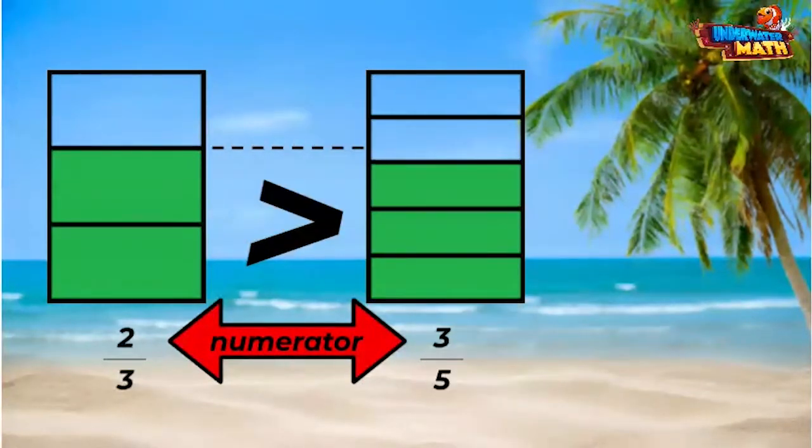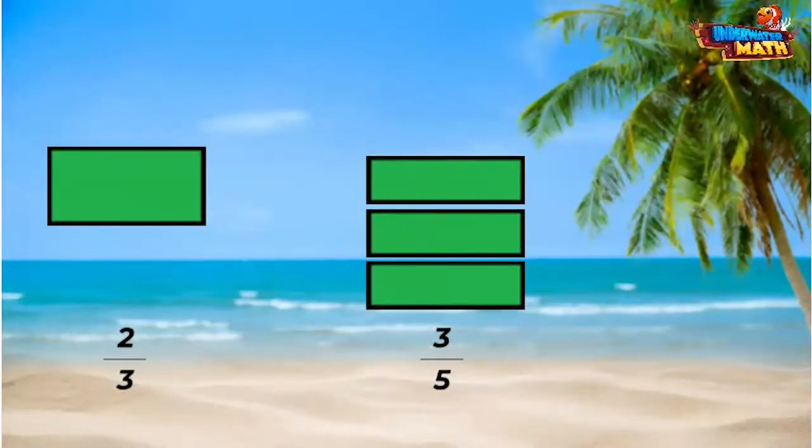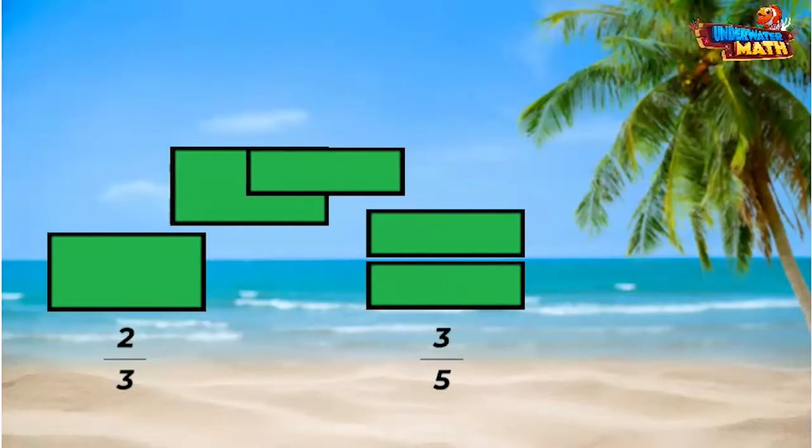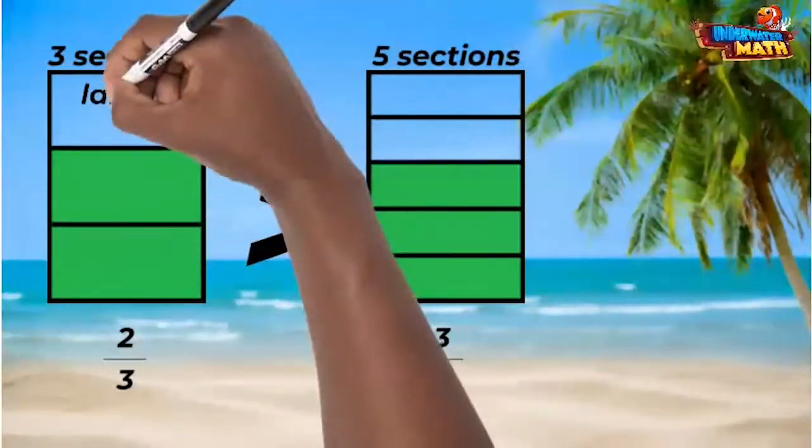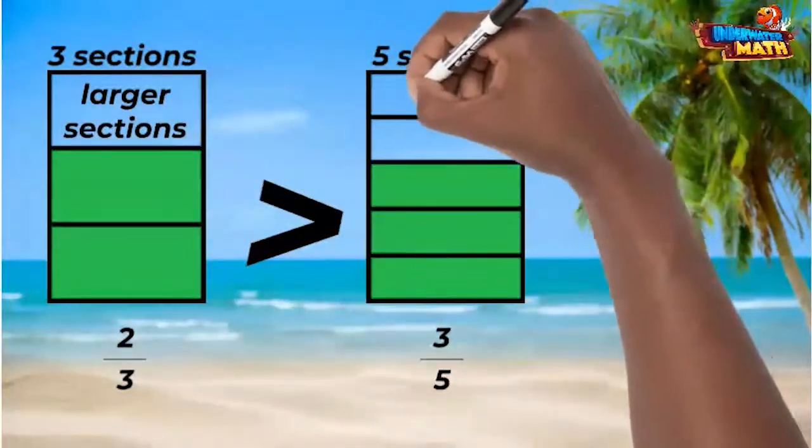But three-fifths has more sections shaded. That's true, but each section is smaller because there are more sections in the same amount of space. And in two-thirds, there are fewer sections, so each section is larger.